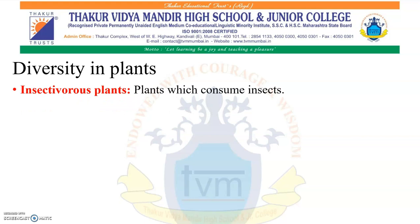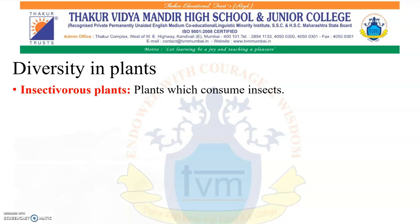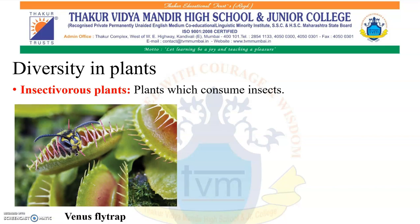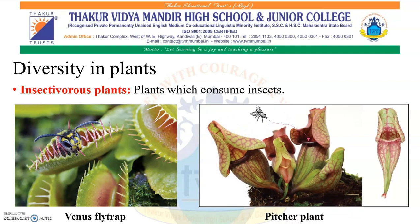Insectivorous plants: Plants which consume insects. You must be surprised — do plants eat insects? Yes! There are several plants which depend upon insects to fulfill their food requirements. Examples are Venus flytrap and pitcher plant. From the photos it is very clear how they are trapping insects. I would like to show you a video so that you get a clear idea about how they trap insects and how the insects are digested inside the plants. Let's watch the video.